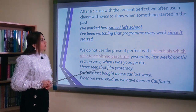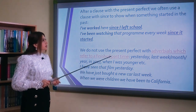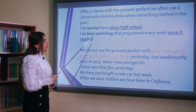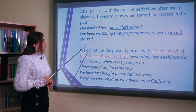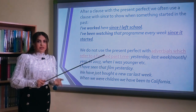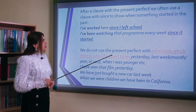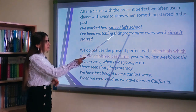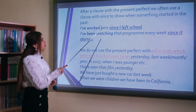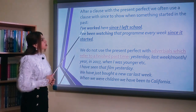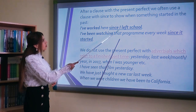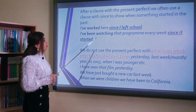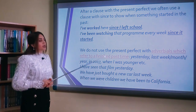After a clause with the present perfect, we often use a clause with since to show when something started in the past. For example: I have worked here since I left school. I have been watching that program every week since it started. Since özündən sonra cümlə yaradırsa, həmin cümlə keçmiş zamanda olur, digər tərəf isə indiki bitmiş zamanda. Məsələn: mən məktəbi qurtarandan bəri burada işləyirəm; başlayandan bəri bu proqramı hər həftə izləyirəm.